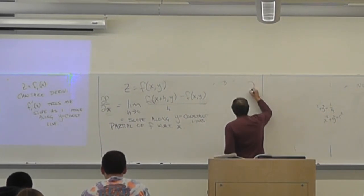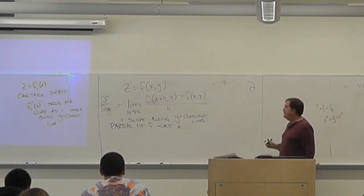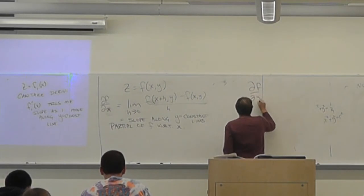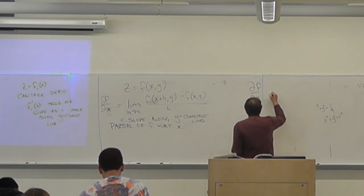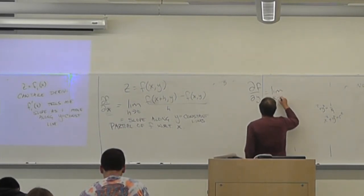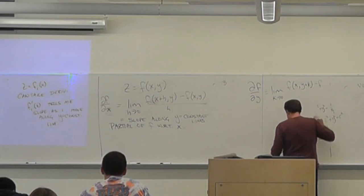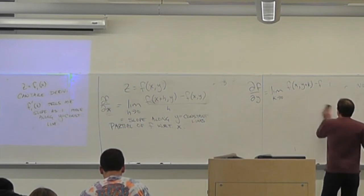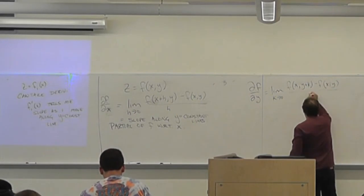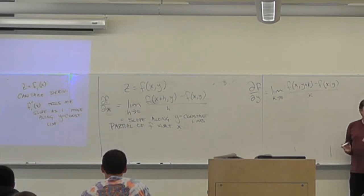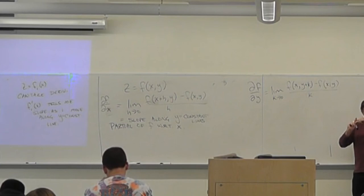The notation for the partial derivative uses a round 'd' — a Cyrillic-style ∂. So ∂f/∂x is the partial of f with respect to x. Another notation is f subscript x, written f_x. Similarly, f_y. These are the slopes in two orthogonal directions.